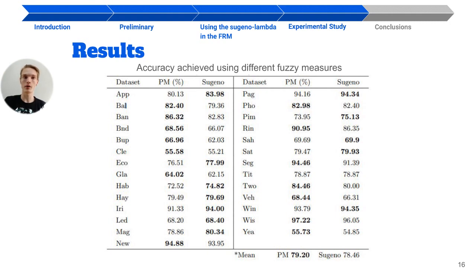and each column represents the Choquet integral combined with distinct fuzzy measures, like the power measure and the Sugeno lambda. We highlight that the highest result for each dataset is in bold. Analyzing the table, we can see that for all of the 27 datasets used, the power measure excelled in 14 datasets when compared to Sugeno lambda.